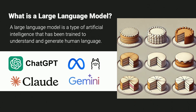A couple of theory things to get out of the way first. A large language model is a type of artificial intelligence trained to understand and generate human language. It's trained on large datasets, learning how words and sentences are structured and how they relate to each other. When given a prompt or question, it uses what it's learned to generate a cohesive response.